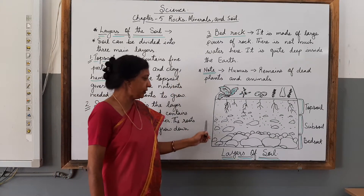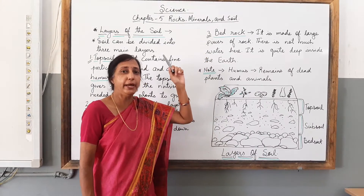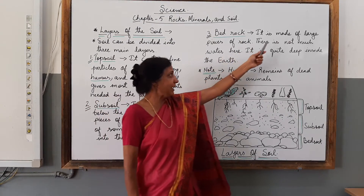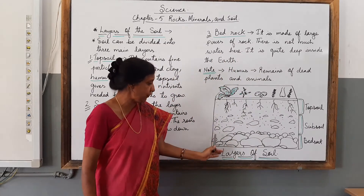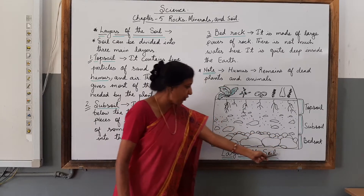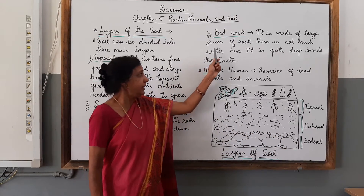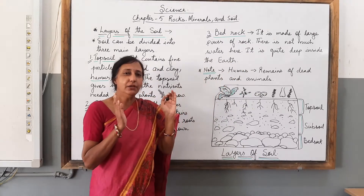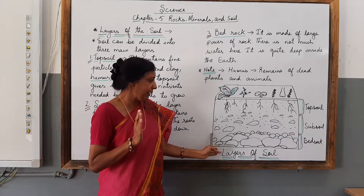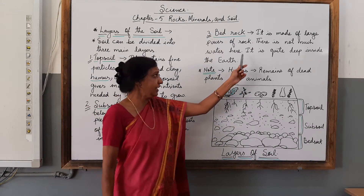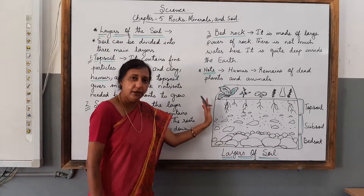Next we will talk about the third layer, which is the bedrock. It is made up of large pieces of rock. Here you can see the large pieces of rock drawn on the board. There is not much water available in the bedrock area, and it is quite deep inside the earth.